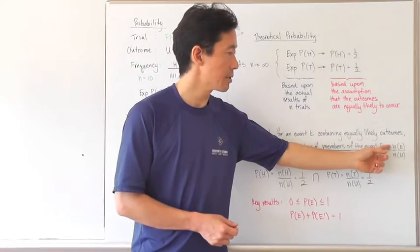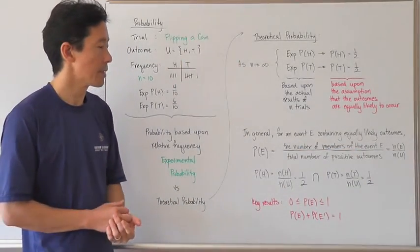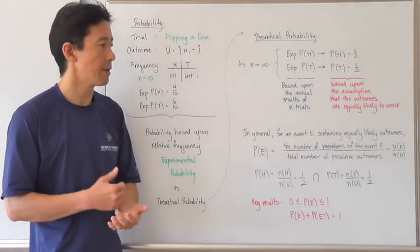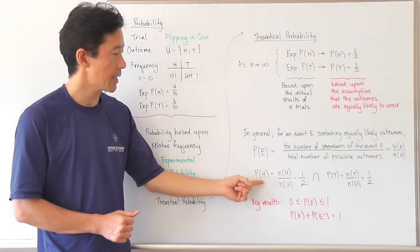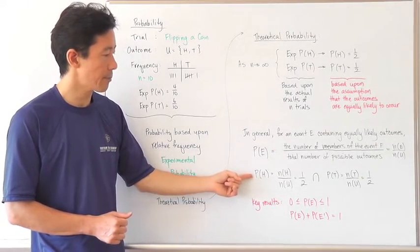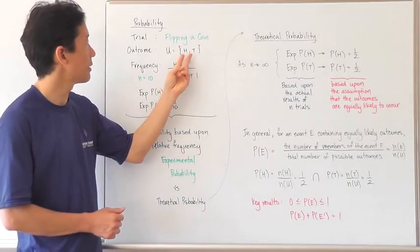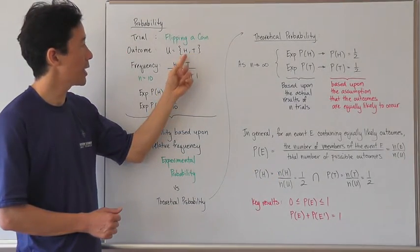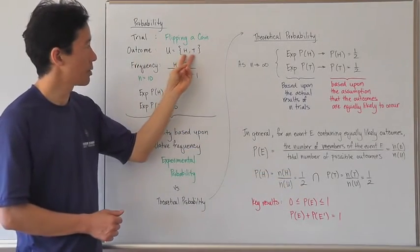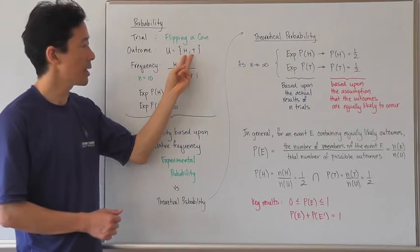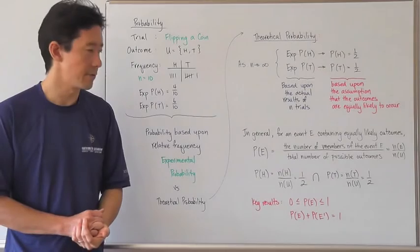We're going to use this notation with n representing the number — so n(E) and n(U), the number of elements in the universal set. For the probability of a head, the number of outcomes of heads in our universal set is only one, so it's one divided by the total number of elements in the universal set, which equals two. That's consistent with the probability of tails as well.